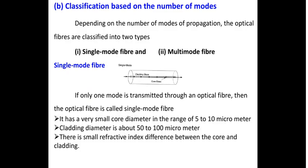The second classification of optical fiber is based on the number of modes. Based on number of modes, it is classified into two: single mode fiber and multi-mode fiber. In single mode fiber, only one mode of light ray can enter inside. Only one mode can pass through, hence it is called a single mode fiber.